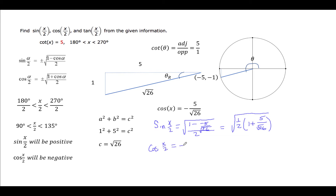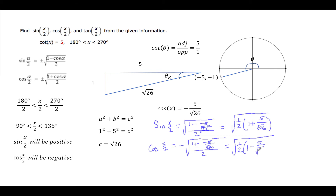The cosine of x over 2 we've decided will be negative, and using the formula, we will have the negative square root of 1 plus negative 5 over the square root of 26, all divided by 2. So we would have negative square root of one-half times 1 minus 5 divided by the square root of 26.